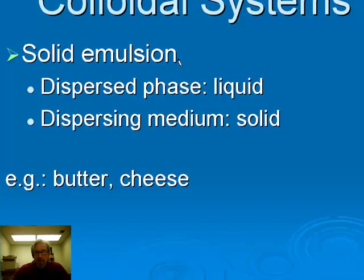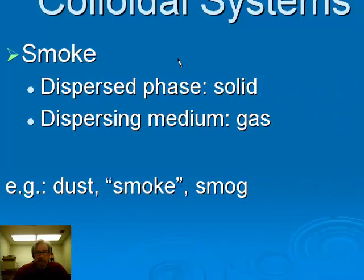A smoke is a solid colloid dispersed through a gas. Dust is an example, and smoke itself — tiny clusters of carbon particles that are non-molecular, not big enough to be suspensions. Smog is actually a combination of smoke and fog; that's where the name comes from. So smog is part smoke and part aerosol.